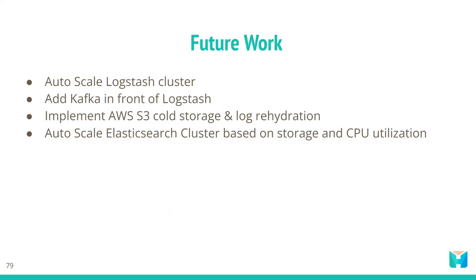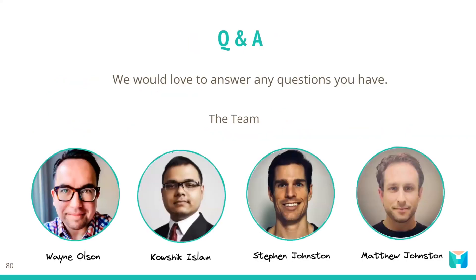Building Herald was a lot of fun and involved solving a lot of challenges. We strongly feel that we have successfully built a robust observability solution; however, there is still room for many improvements. Future features we want to add include: auto-scaling the Logstash cluster to better handle spikes in telemetry data generation; adding Kafka in front of Logstash to minimize the risk of data loss; implementing AWS S3 cold storage and a log rehydration mechanism to lower data storage costs and enhance Elasticsearch performance; and auto-scaling the Elasticsearch cluster based on both storage and CPU utilization rather than just CPU utilization.